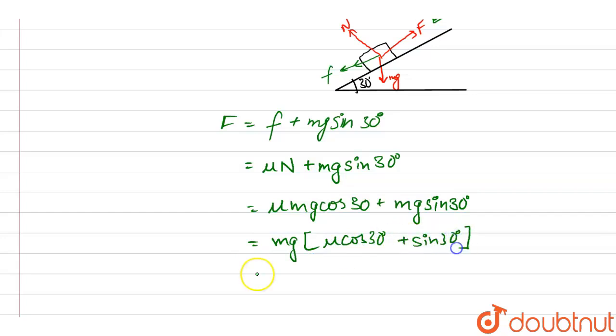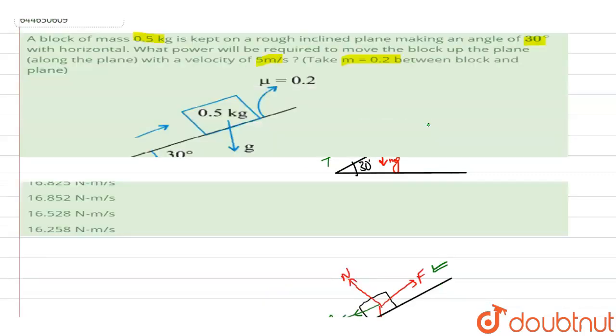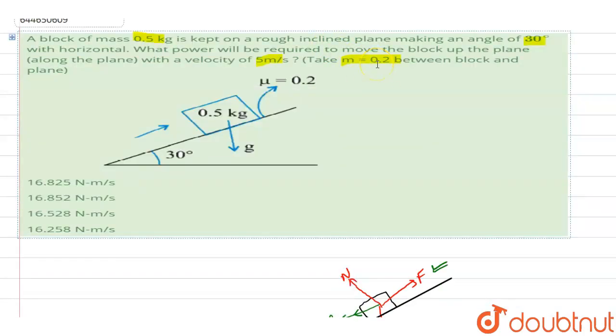Now let's put the values. The mass is given to be 0.5 kg, so let's put the value of mass. The gravitational constant is 10, and mu is given to be 0.2.